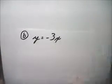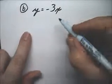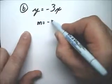Now part b is y equals negative 3x. So for a slope, m of course is equal to negative 3.